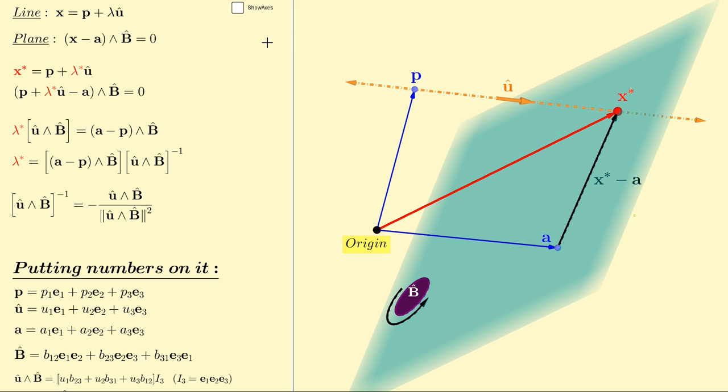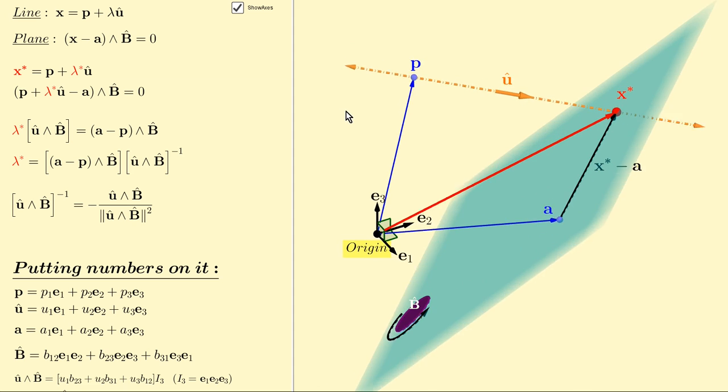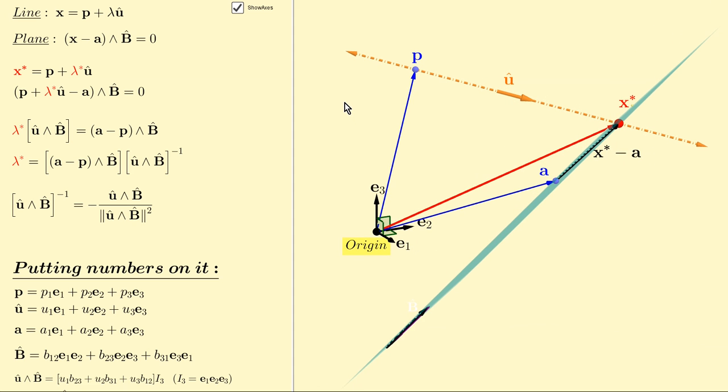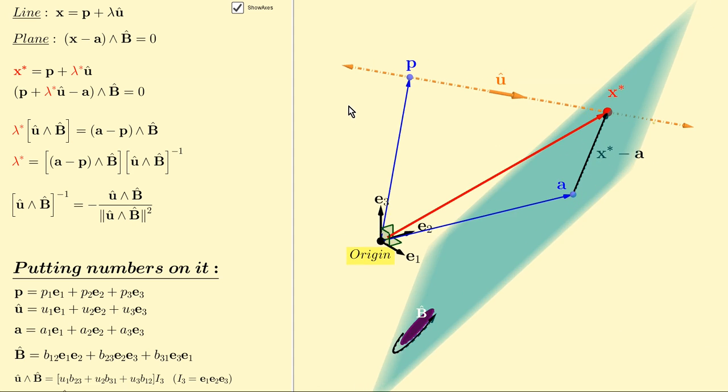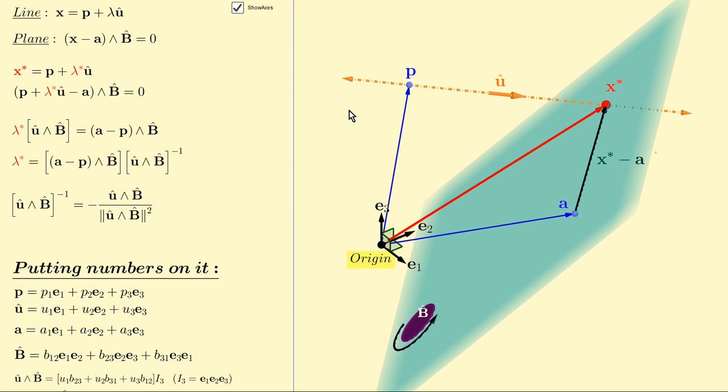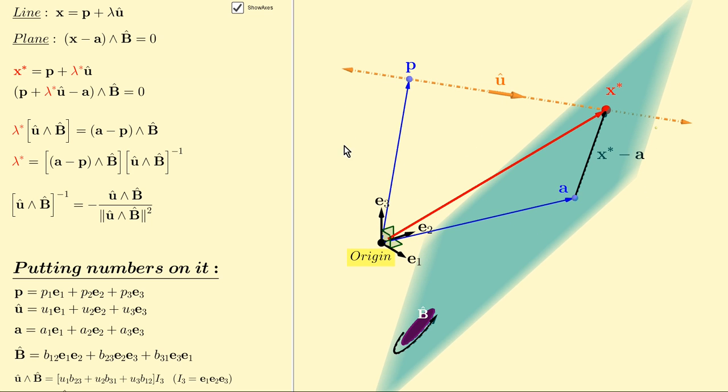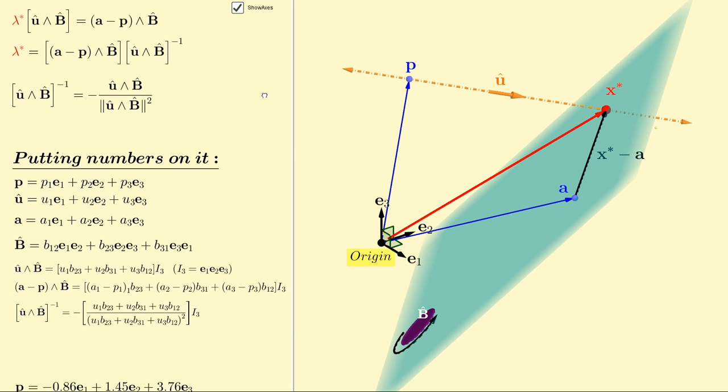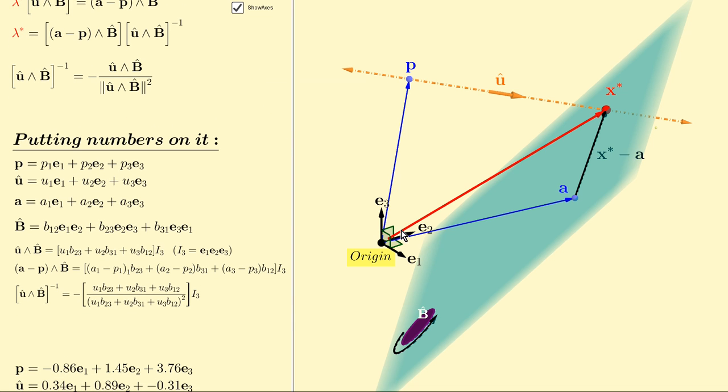How about putting some numbers on this because sooner or later that's what we'll want to do. What we'll do is specify a set of orthonormal vectors, a right-handed set, and express all of our vectors and our bivector according to that reference frame here.